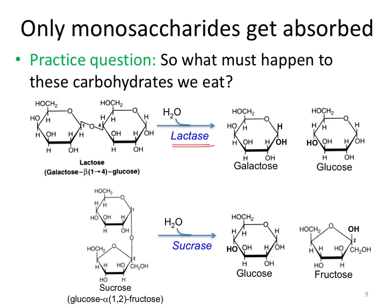Lactase hydrolyzes lactose — note it is a beta-galactosidase, defined by this beta linkage, and that the first sugar is galactose. It hydrolyzes lactose to galactose and glucose. Sucrase, on the other hand, is an alpha-glucosidase. Sucrose is glucose linked alpha to fructose, where the alpha refers to the orientation of the bond, and sucrase digests sucrose to one molecule of glucose and one molecule of fructose.